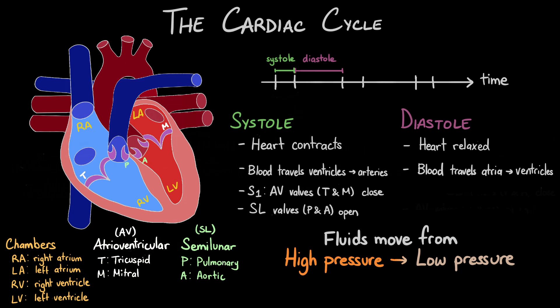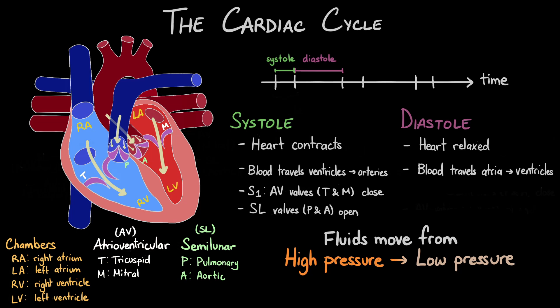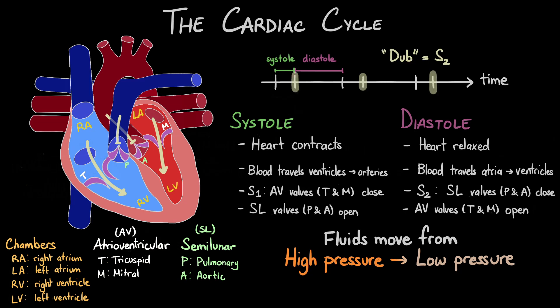During diastole, when the ventricles relax and expand and when the atria contract, pressure is higher in the atria than in the ventricles, so the atrioventricular valves open to allow blood to flow into the ventricles. However, pressure is also higher in the arteries than in the ventricles, so blood in the arteries wants to move back into the ventricles. But the blood directly behind the valves will pull on the flaps and shut the semilunar valves, creating the second dub sound, also called S2.